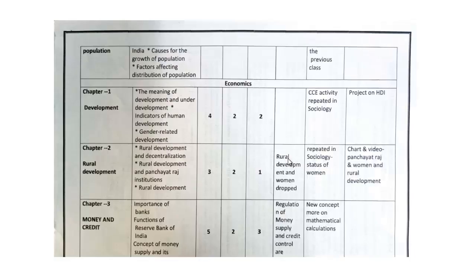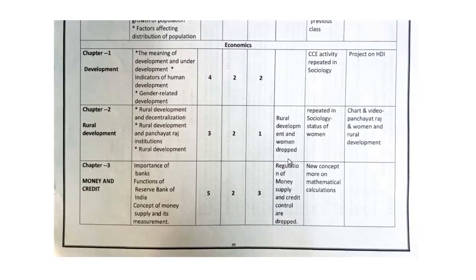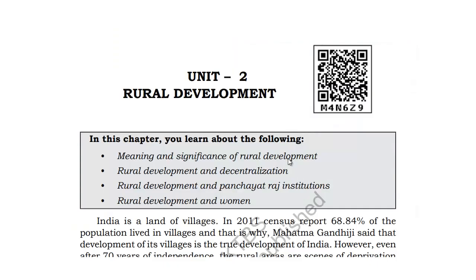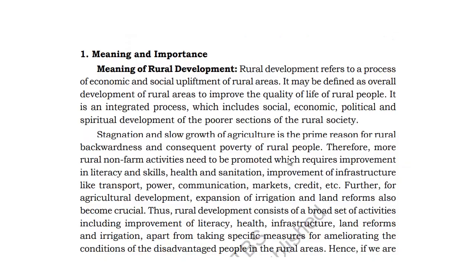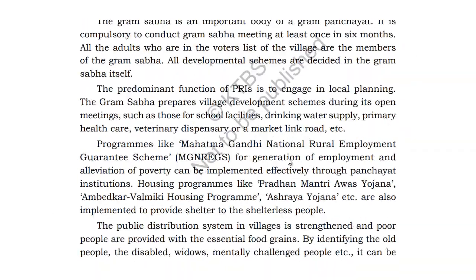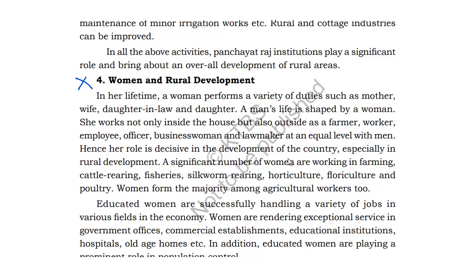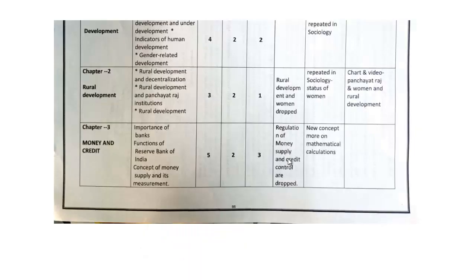Coming to Economics: Chapter 1 is as it is. In Chapter 2, 'Rural Development,' the topic 'Rural Development and Human' — specifically 'Women and Rural Development' — has been deleted. This is in Textbook 1. Let us mark that topic in the textbook. This topic is not there now.